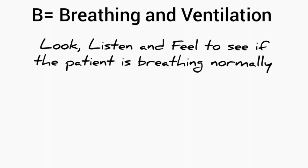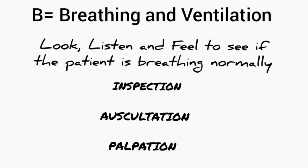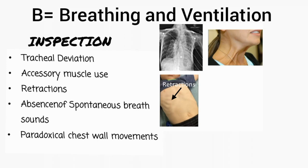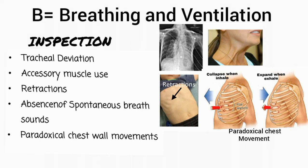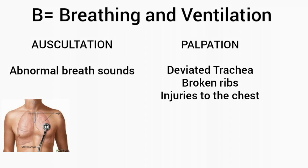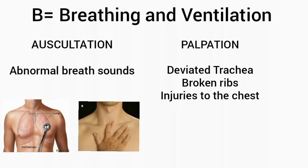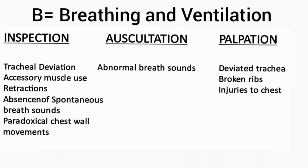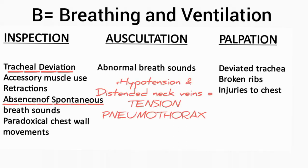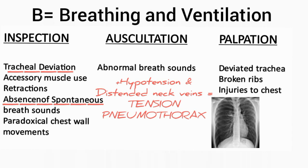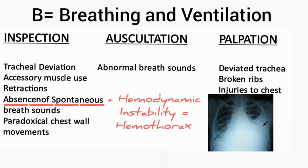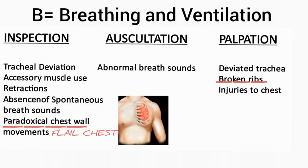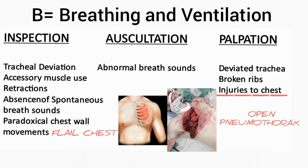After airway management, the next step is to look, listen, and feel to see if the patient is breathing normally, assessed by inspection, auscultation, and palpation. Inspection involves looking for tracheal deviation, accessory muscle use, retractions, absence of spontaneous breathing, and paradoxical chest wall movements. Auscultation detects abnormal breath sounds, and palpation is done to feel deviated trachea, broken ribs, and chest injuries. Absent breath sounds with tracheal shift, hypotension, and distended neck veins indicate tension pneumothorax. Absent or diminished breath sounds with hemodynamic instability indicate hemothorax. Paradoxical chest wall movements indicate flail chest, and an open chest wound indicates open pneumothorax.